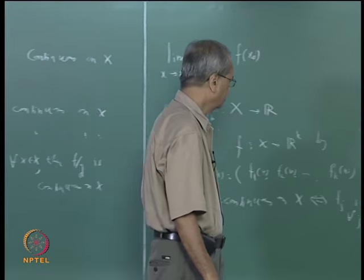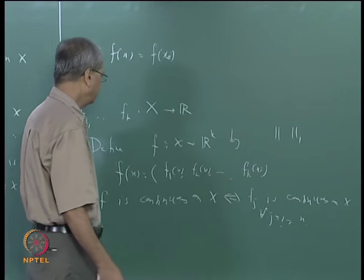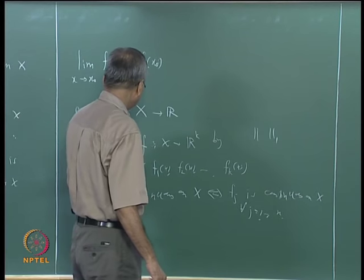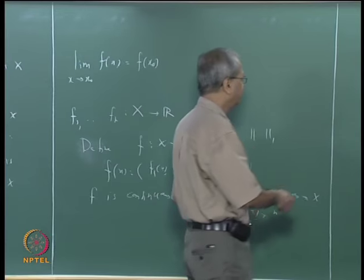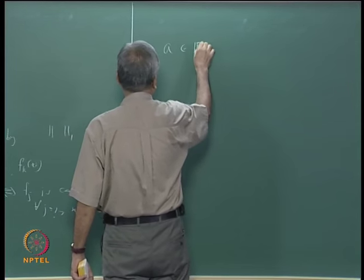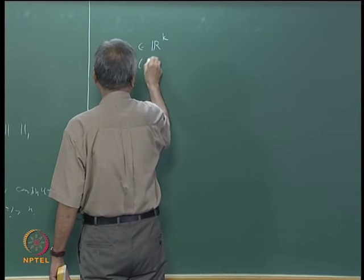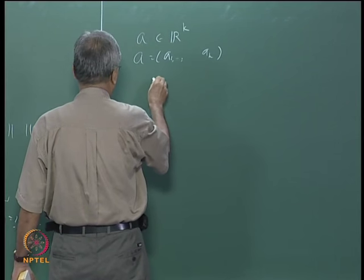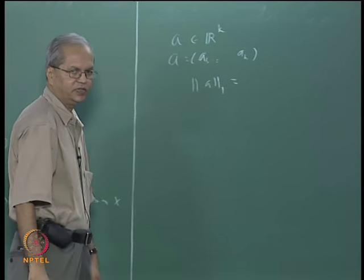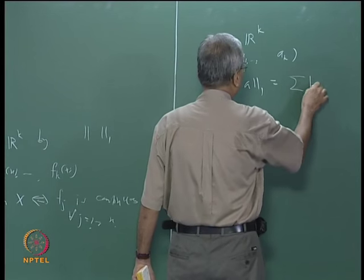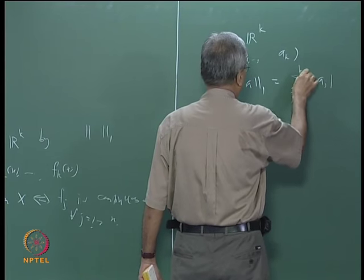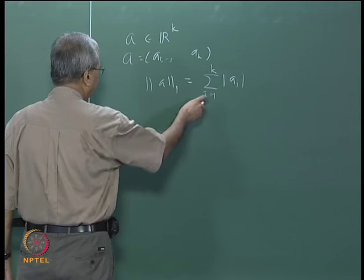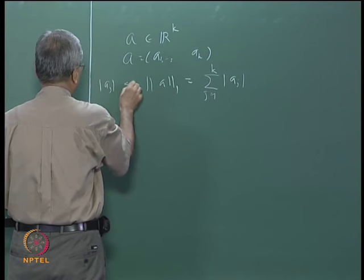To see this, all we need is the relationship between the absolute value in R and the norm in R^k. Suppose we take a point a = (a1, a2, ..., ak) in R^k. We know that the L1 norm of a is the sum of |a_j| for j from 1 to k. In particular, each |a_j| is less than or equal to the norm of a.